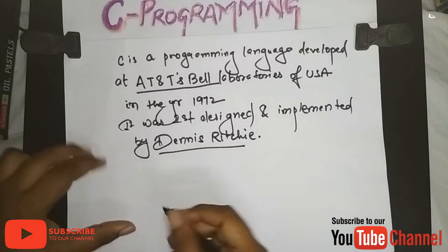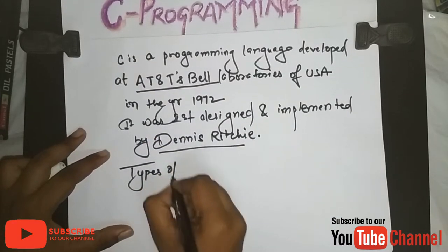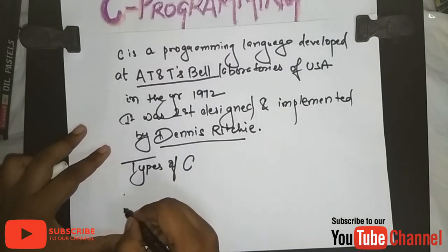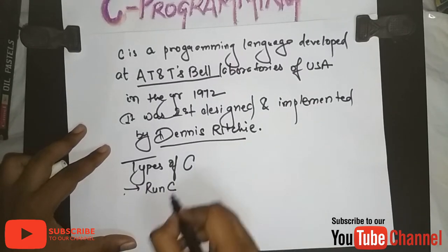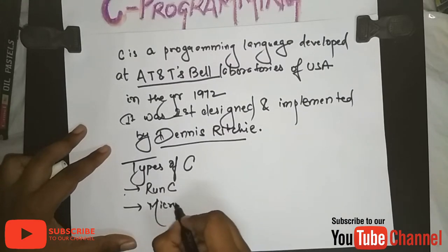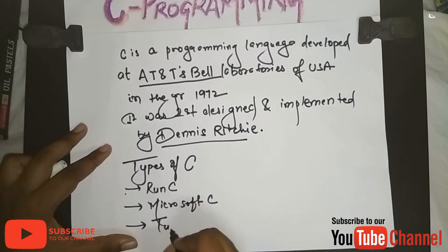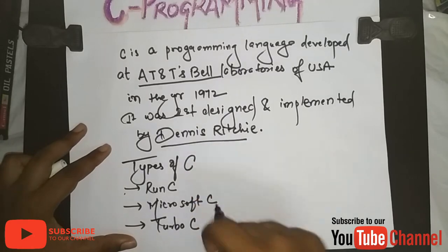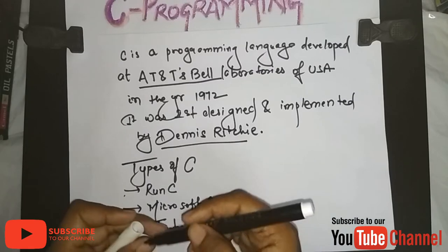Now let me tell you the types of C. We have different types of C, like Run C, Microsoft C, and Turbo C. These are the types of C that we are going to discuss later in our video.